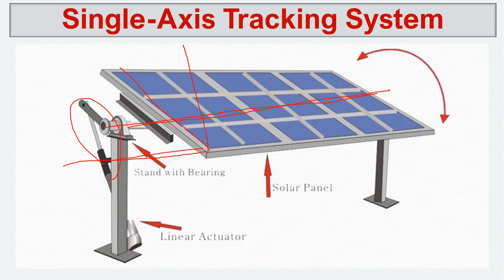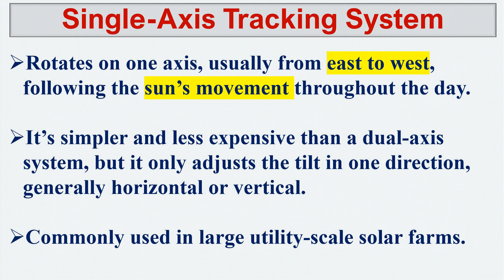Based on knowledge of where the sun appears in the morning and afternoon, operators can manually move the solar panels. This is a single axis tracking system, but it is a manual tracking system rather than an automatic one. Single axis tracking rotates on one axis, usually from west to east. It is simpler and less expensive than the dual axis system, but it only adjusts the tilt in one direction.